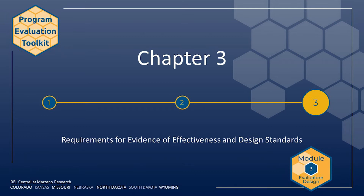The requirements for evidence of effectiveness under ESSA are referred to as the ESSA tiers of evidence. The chapter also discusses the What Works Clearinghouse, or WWC, design standards for evaluating the strength of evidence. Both ESSA tiers of evidence as operationalized in the 2016 Non-Regulatory Guidance and WWC standards are linked to guidelines for conducting rigorous research and can be used to guide the design of an evaluation to meet specific evidence goals. ESSA tiers of evidence and WWC standards can also be used to assess the evidence behind existing programs and interventions.